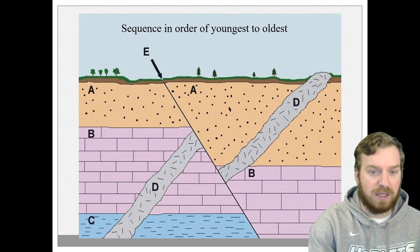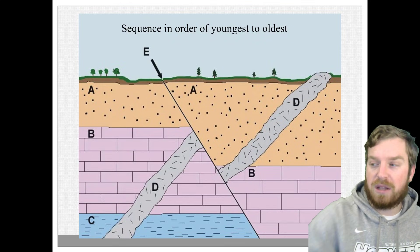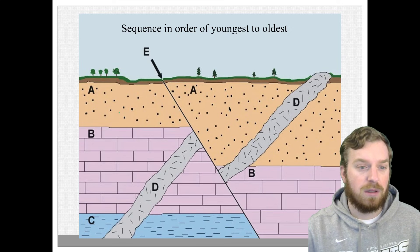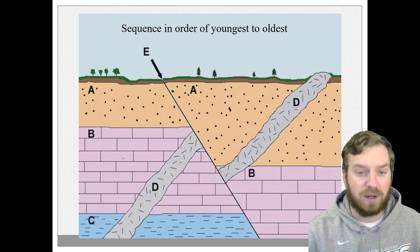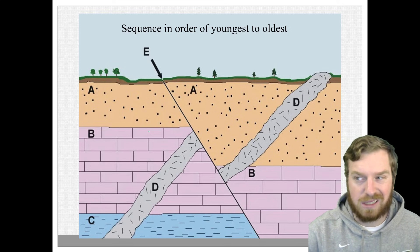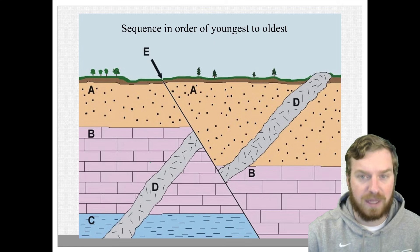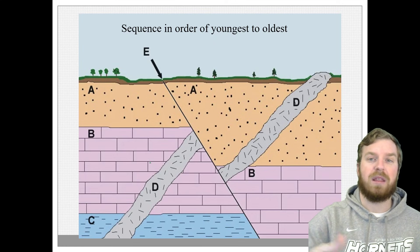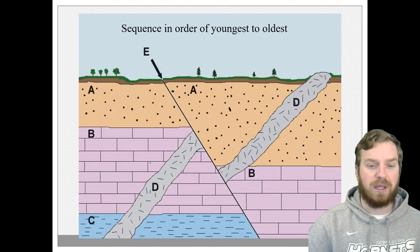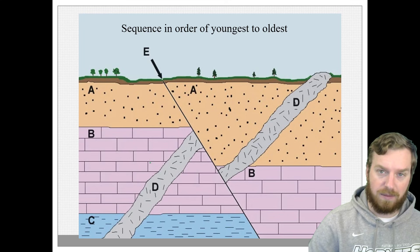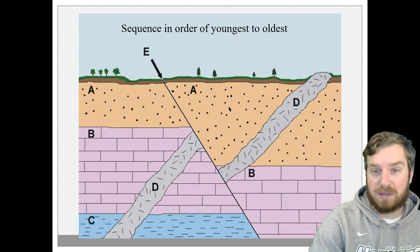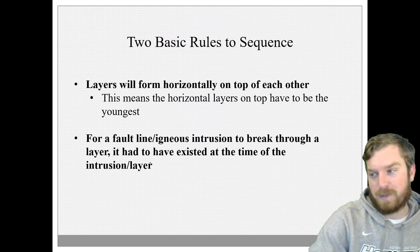For instance, if we go back into this picture, like for instance, on the left side here, we have a layer A on top of layer B. Layer A couldn't have existed on top of layer B unless layer B was already there. And so layer B we can naturally say is probably going to be older than layer A, just because it is further down. So that's the first thing.